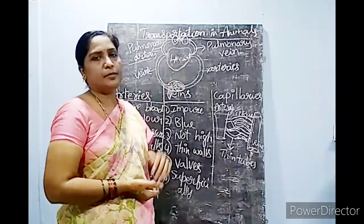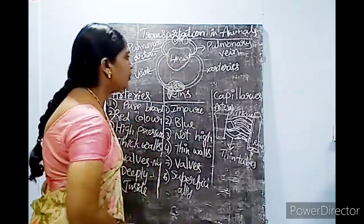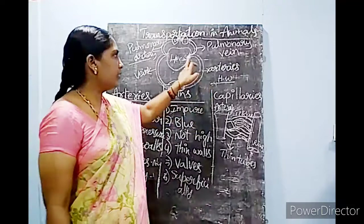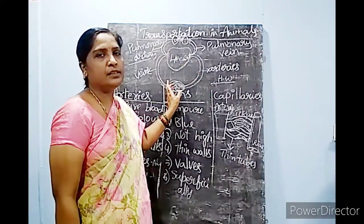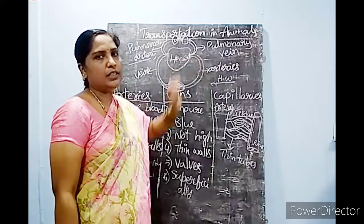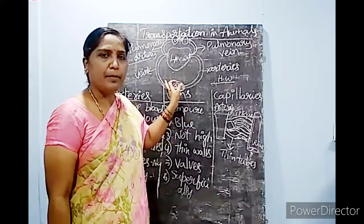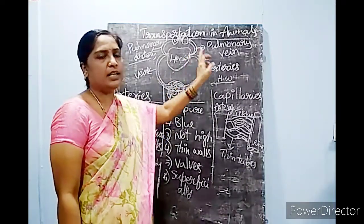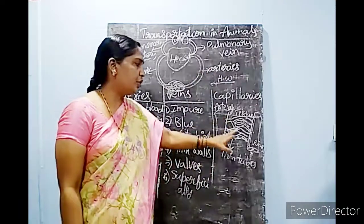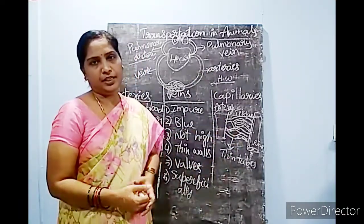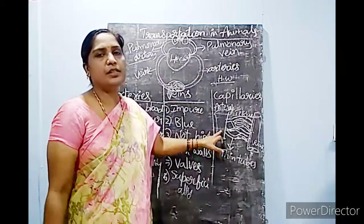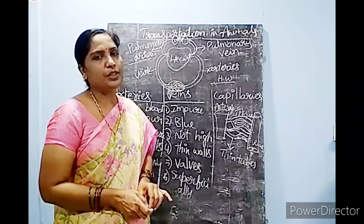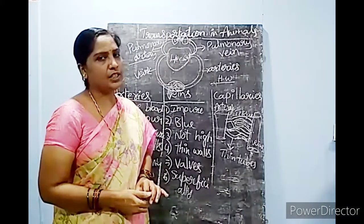Your today's homework, children: draw the schematic diagram of your heart and label it, and also draw and label the formation of capillaries. These two diagrams are your home assignment. In tomorrow's class we will discuss about the structure of heart and the functions of heart. Thank you.